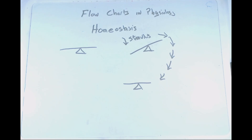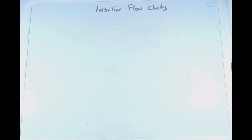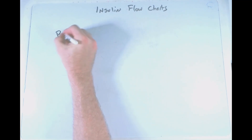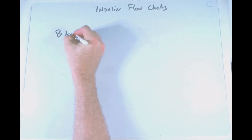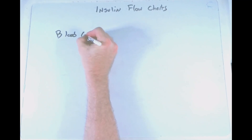A key way of studying these cause and effect steps in homeostasis is the use of flowcharts. To demonstrate how we can use flowcharts in the study of physiology, we're going to take a look at blood glucose levels.